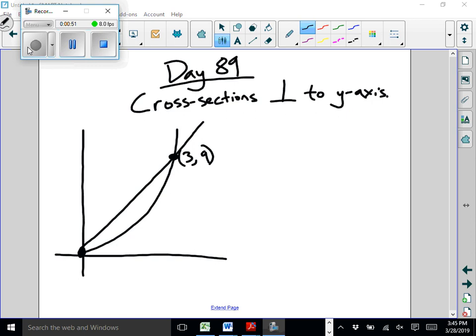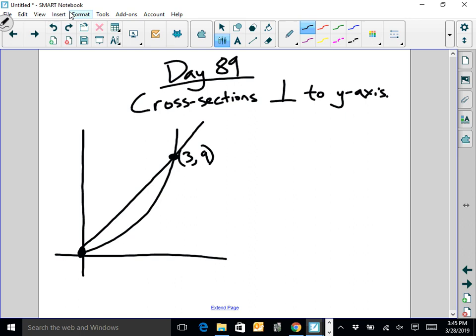So just to recap, if I was doing cross sections perpendicular to the x-axis, I would do the integral from 0 to 3, and I just have to figure out the area of that shape times dx.